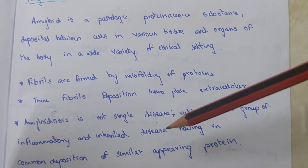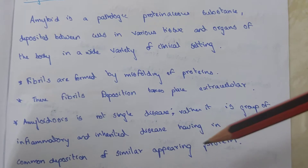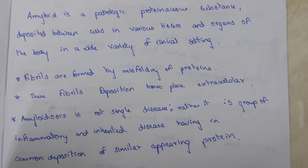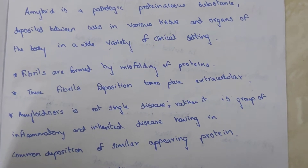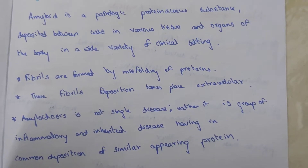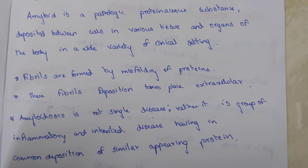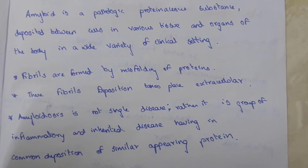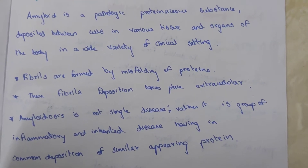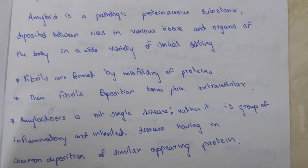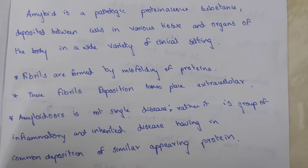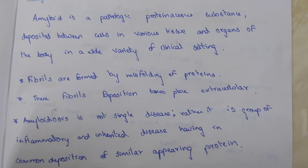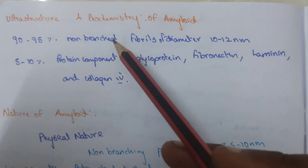Amyloidosis is not a single disease; rather, it is a group of inflammatory and inherited diseases having common deposition of similar appearing protein. It causes both inflammatory as well as inherited diseases, with only one similar protein appearing in both.